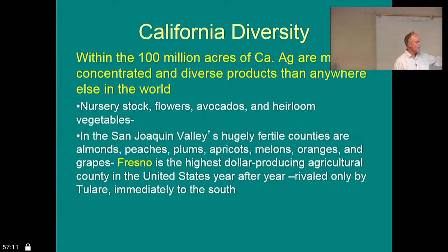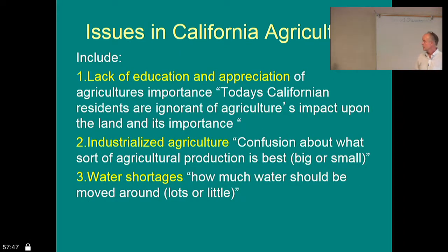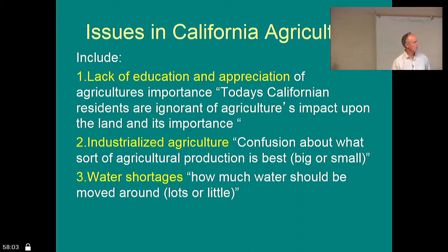Fresno is the highest dollar-producing agricultural county. Fresno County is rivaled only by Tulare County, just south of it — and those are the two top-producing agricultural counties in the United States year after year. So, more importantly, we'll start looking at some of the issues. Right at the top of the list, which really resonates with me, is lack of education and appreciation of agricultural importance — most Californians are ignorant of agriculture's impact on the land. The next issue is industrialized agriculture.